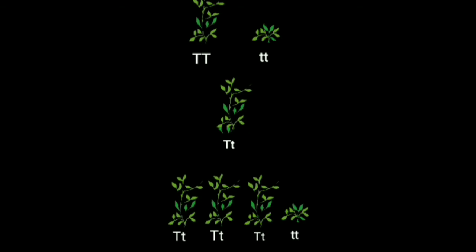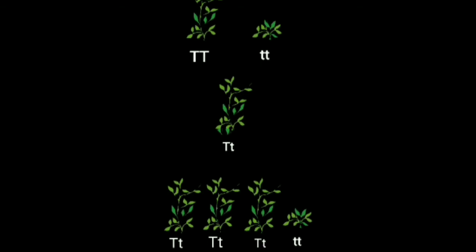When the F1 generation plant was self-pollinated, the F2 generation plants expressed both characters in a ratio of 3:1, in which three plants showed the dominant character and one plant was homozygous recessive. We can conclude that in a heterozygous condition, the character able to express itself is the dominant character, and the suppressed character is recessive — for example, in capital T small t, the plant was tall.